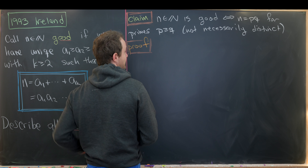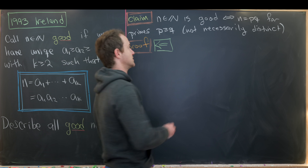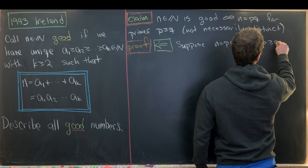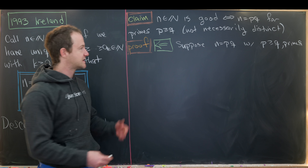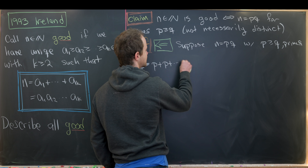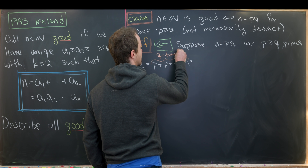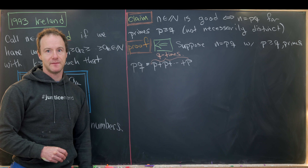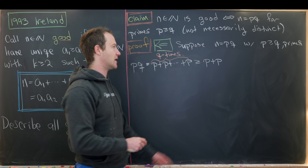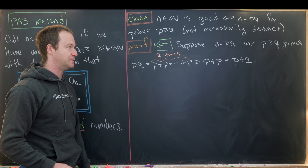Let's prove the reverse direction first: assume n = pq with p ≥ q both prime, and show n is good. Since q is prime, q ≥ 2, so p × q = p + p + … (q times) ≥ p + p ≥ p + q. Therefore p × q ≥ p + q, which means pq − (p + q) ≥ 0, so it's a natural number.